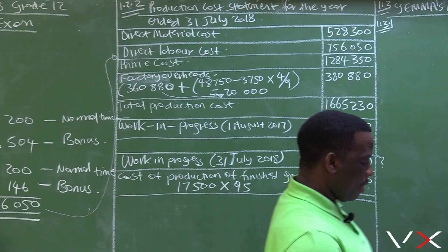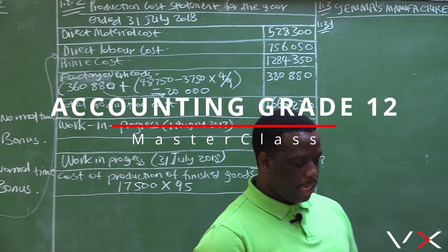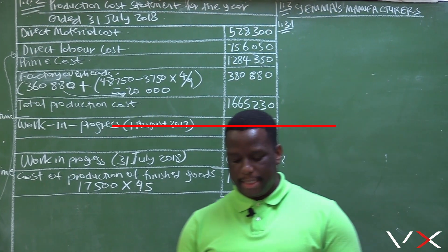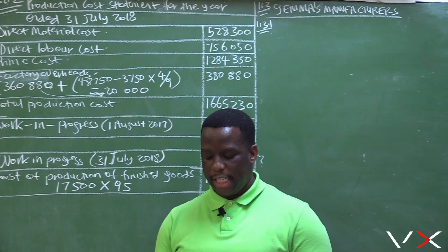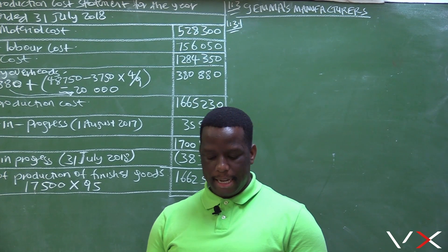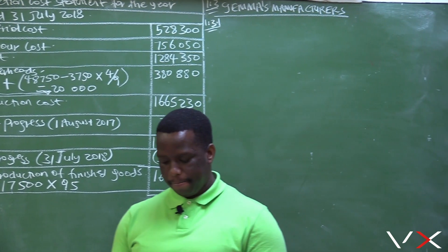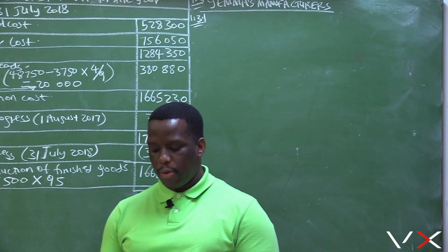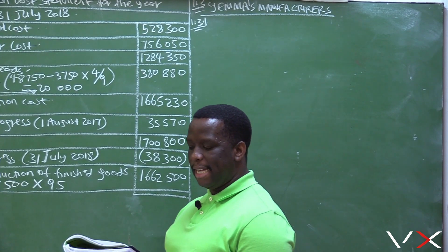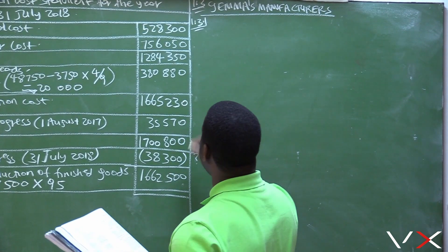1.3. Gamer Manufacturers — the business manufactures security gates. The financial year end is 31st August 2018. Calculate the break-even point for the year ended 31st August 2018.